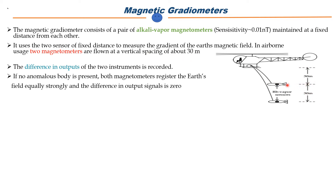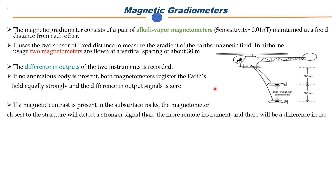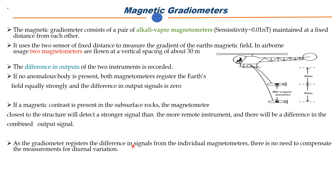When no anomalous body is present, both magnetometers sense the same Earth's magnetic field and the difference is zero. When a magnetic contrast is present in the subsurface rock, the sensor closer to the structure detects a stronger signal, producing a difference in the combined output. The gradiometer registers the difference in signals from individual magnetometers, so compensation for diurnal variation is automatically taken care of. The measurement of the vertical gradient emphasizes shallow source magnetic anomalies while suppressing deep-seated features.